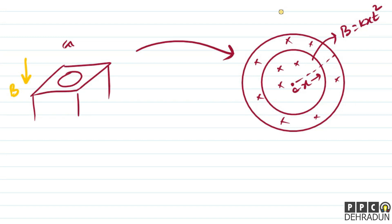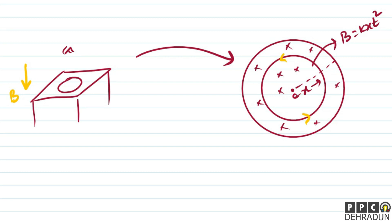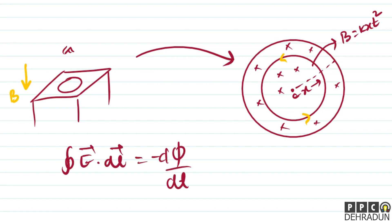By symmetry, since we have a cylindrical region of magnetic field, the induced electric field lines will be circular. Since the magnetic field into the screen is increasing, to oppose it, the induced electric field lines should be in the anti-clockwise sense so that the resulting magnetic field lines come out of the screen. To find the induced electric field magnitude, we use: ∮ E⃗ · dl⃗ = −dφ/dt.